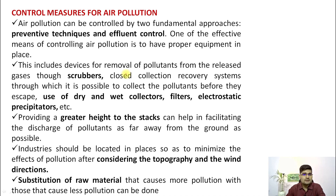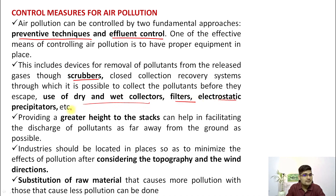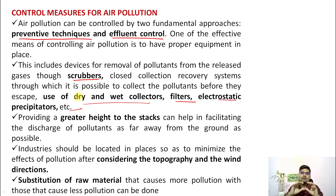Control measures for air pollution involve two fundamental approaches: preventive technique and effluent control. Prevention addresses toxic substances before they are released into the air. Measures include using scrubbers, dry and wet collectors, filters, and electrostatic precipitators — installed in industries with chimneys — along with air quality control measurement. All these need to be installed on industries releasing toxic substances into the air.